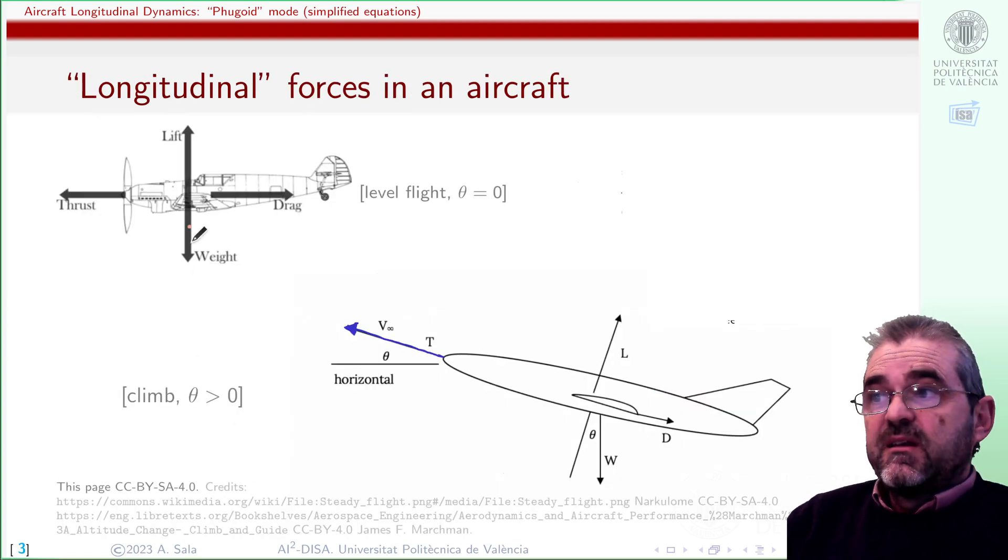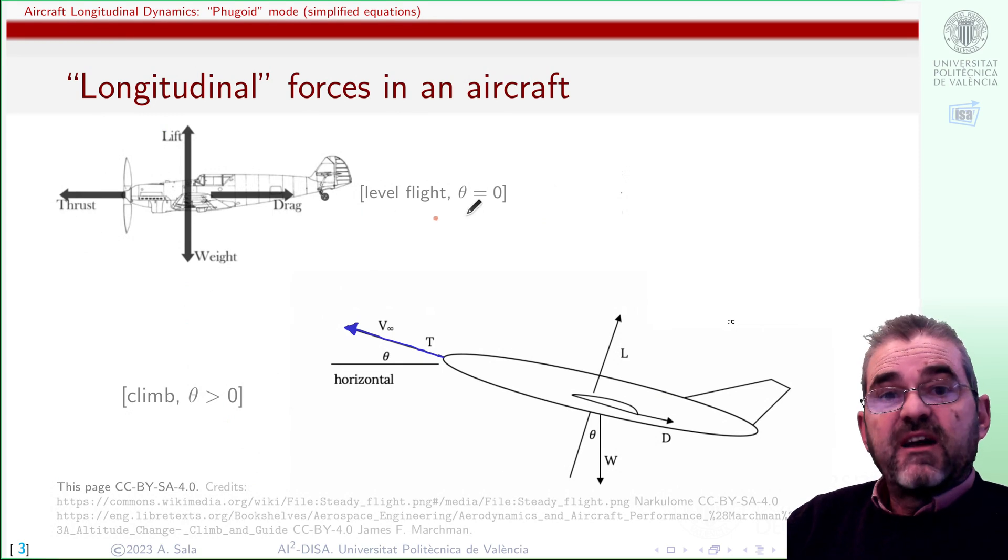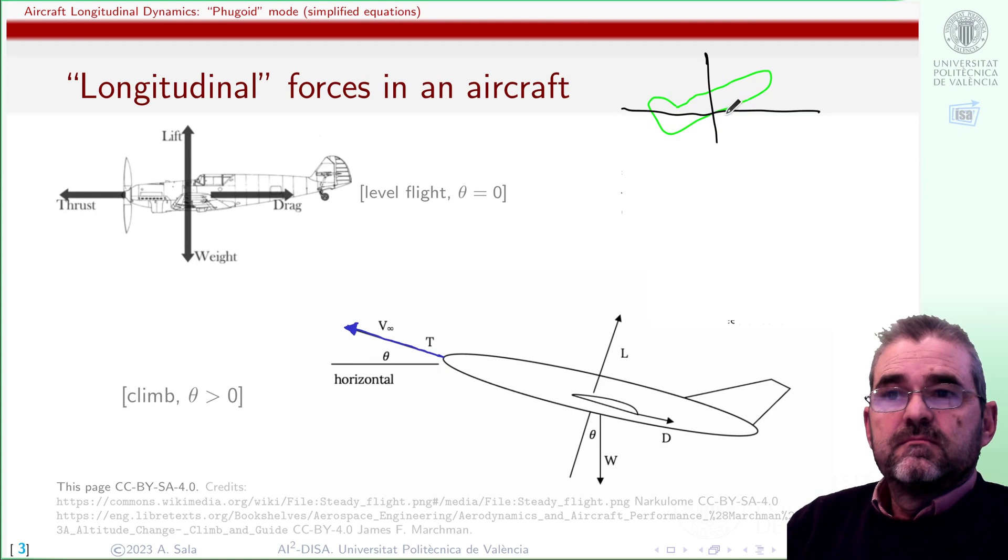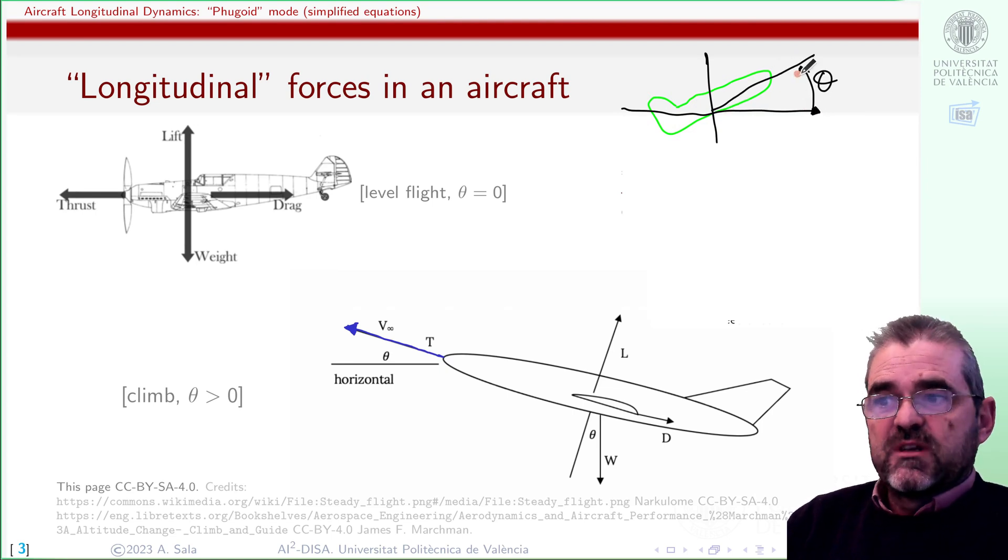So this will be the dynamics. And the only remaining thing is carrying out this force balance in an aircraft. So we need to balance lift and weight if we had level flight in the vertical direction and thrust and drag in the horizontal direction. But flight will not be always level. In here, for instance, we have a climbing flight path in which the air speed, the speed of the center of gravity, has an angle θ with respect to the horizontal line.